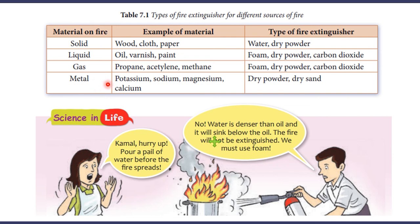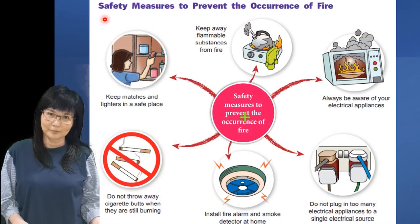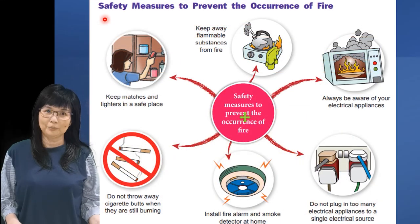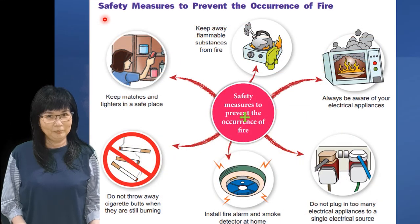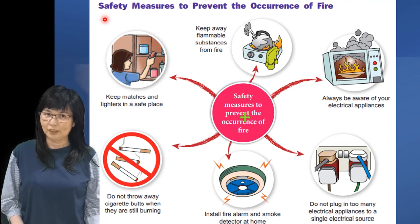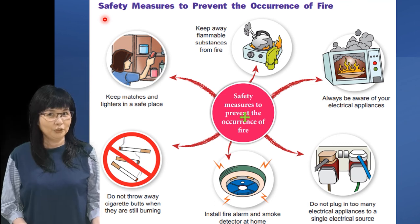If the material on fire is a type of metal — for example potassium, sodium, magnesium, or calcium — the types of fire extinguishers that can be used are dry powder and dry sand. Next, let's look at some safety measures to prevent the occurrence of fire.